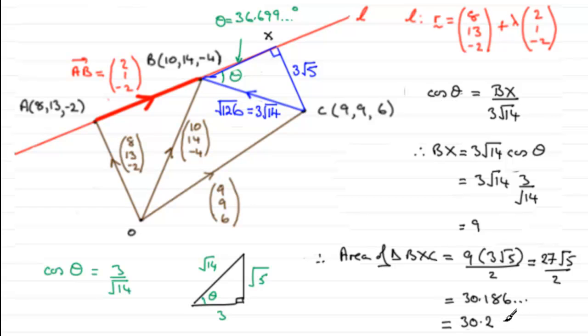If you wanted to put some kind of units in here, because not like in centimeters or anything, you could write units squared. But that's up to you, you're not going to lose any marks if you just left it as 30.2, all right?